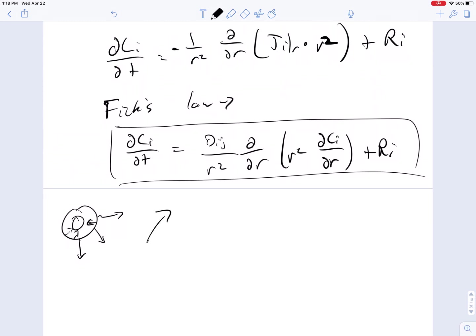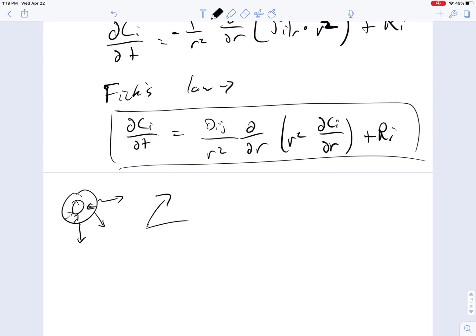But for this one, I just wanted to introduce how you get from a shell balance to this general reaction equation, diffusion with reaction equation, that we will then use as the basis for some of our next steps, which is to determine the maximal binding and unbinding rates for biochemical reactions.